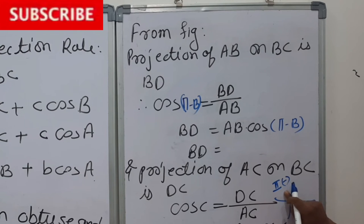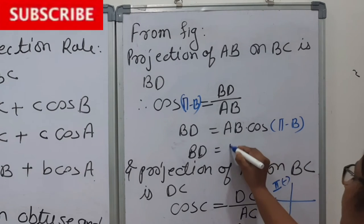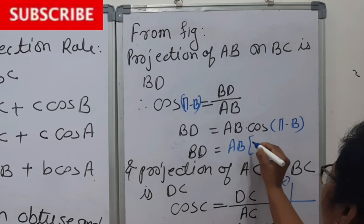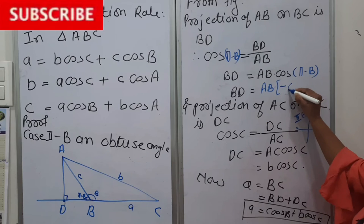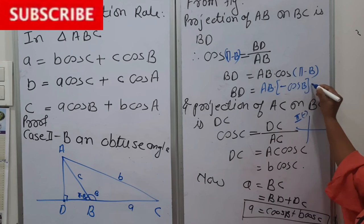So because of second quadrant, we will take this AB as it is. Because of second quadrant we will take minus, and cos π minus B is cos B. It means minus c cos B.